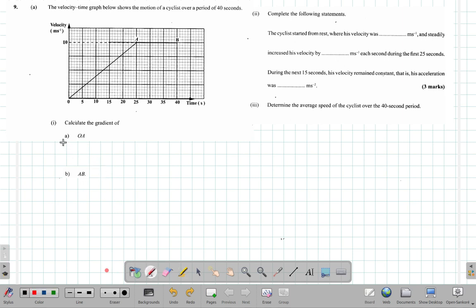...is rise divided by run. For gradient OA, how much does it rise divided by how much it runs? One way to do that is from a right angle triangle: from one end draw a horizontal line, from the other end draw a vertical line. Where they meet is a right angle. The height of this triangle is 10.